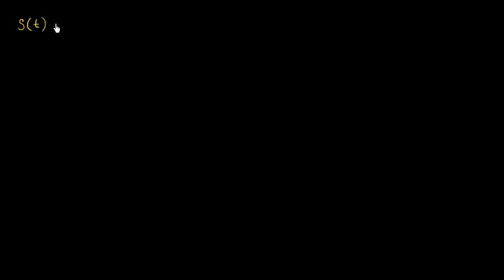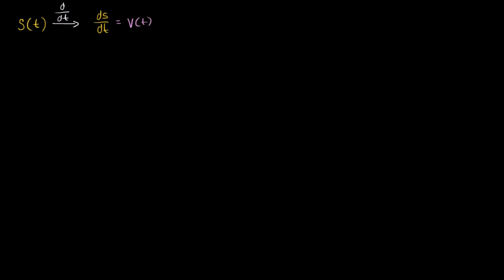If we were to take the derivative with respect to time of this function s, what are we going to get? We're going to get ds/dt, or the rate at which position changes with respect to time. And what's another word for that? Well, that's just velocity. So we could write that as velocity as a function of time.